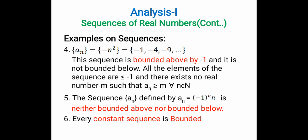Next we have the sequence aₙ defined by the nth term aₙ = (-1)ⁿ · n. Now this sequence is neither bounded above nor bounded below — there exists no real number which satisfies the condition of upper bound or lower bound. So this sequence is not a bounded sequence.